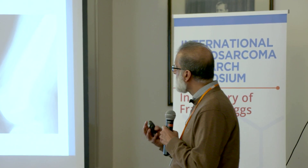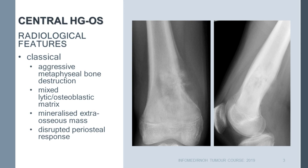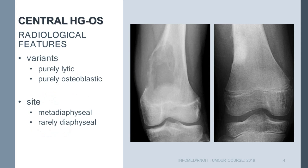As far as the radiologist is concerned, osteosarcomas are very classical in the correct patient age group: an aggressive metaphyseal destructive lesion with mixed lysis and bone formation, as you see here, with a Codman's triangle — this is all very classical for osteosarcoma. Occasionally, in about 13% of cases, they can be purely lytic.